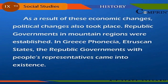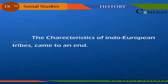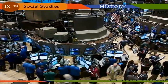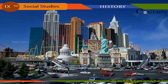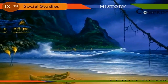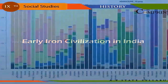As a result of these economic changes, political changes also took place. Republic governments in mountain regions were established in Greece and Phoenicia as city-states. Republic governments with people's representatives came into existence. Social changes followed: the characteristics of Indo-European tribes came to an end. Traders, professional groups, craftsmen, and government servants converged into cities. Developed economy and large-scale production increased the leisure of the people, helping in the development of fine arts, literature, and philosophy.